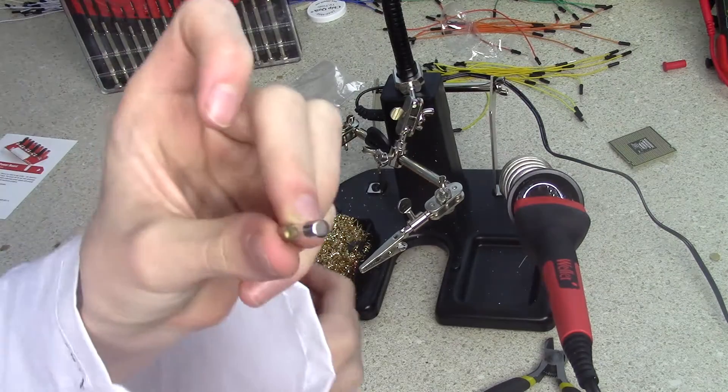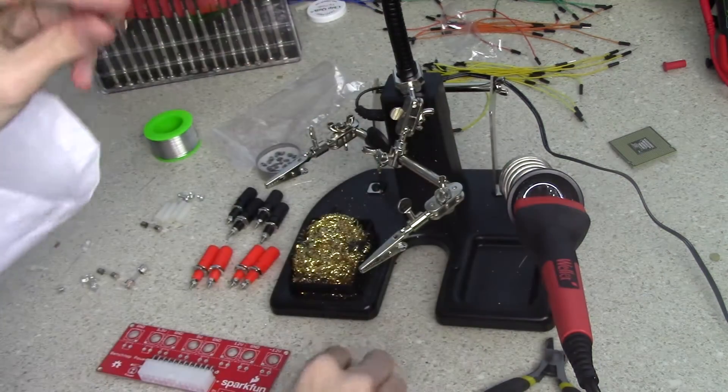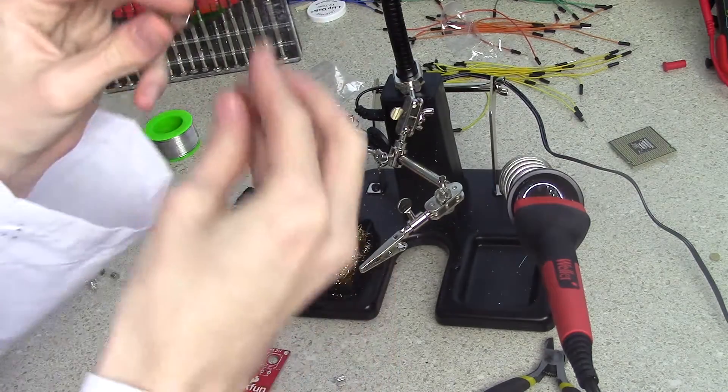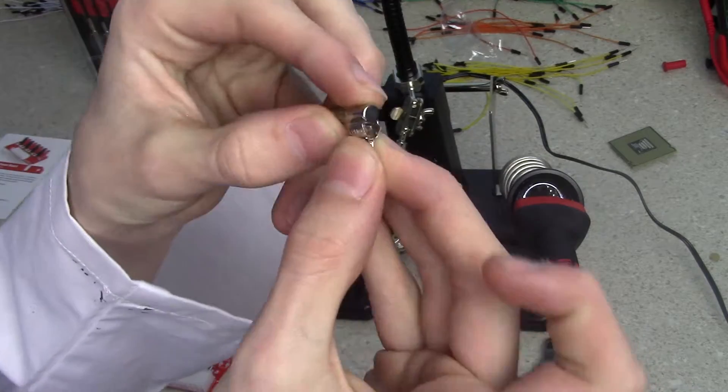For the next step you will need one of the two fuses and two of the small metal grippy things. Snap a grippy thing onto each side of the fuse.